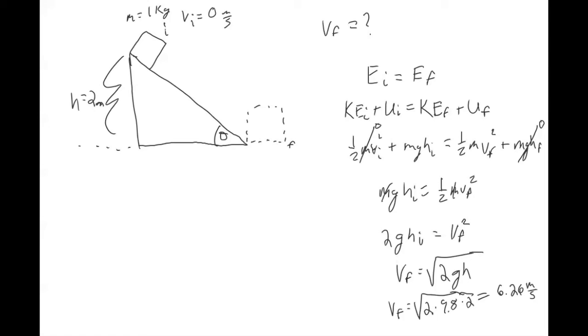So if this block was sliding from this height down this ramp, then we know the final velocity. So we know that the magnitude of the final velocity is 6.26. Because energy is dealing with scalars, we don't necessarily know the direction, but you could use your own intuition to say that this would be the direction of the final velocity.